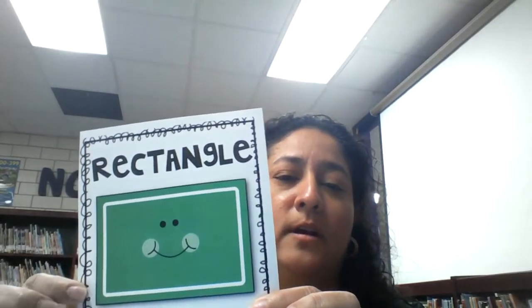The triangle does have three sides and three vertices. On the next shape, this one has four sides and four corners or vertices, and it has two long sides and two short sides. And some people may say that it kind of looks like a dollar bill. If you said rectangle, you are correct.